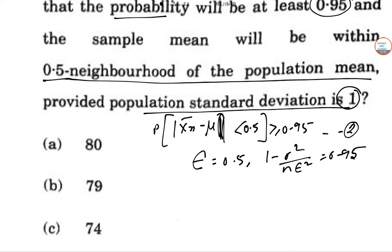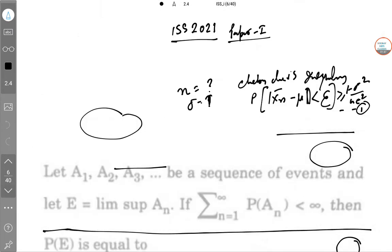So as σ² equals 1, we have 1 minus 4/n equals 0.95, and n will give you 80. So the answer is (a). Smoothly done.